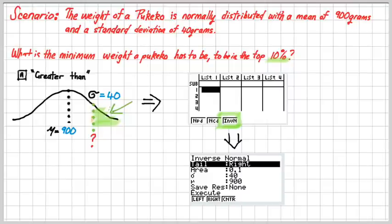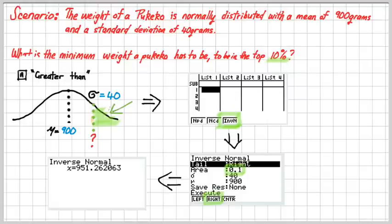For the 10% there, my standard deviation is 40, the mean is 900. Just highlighting a few key parts there for you. And I get an answer there. The answer is telling me that I am approximately looking for a value of 951 grams.